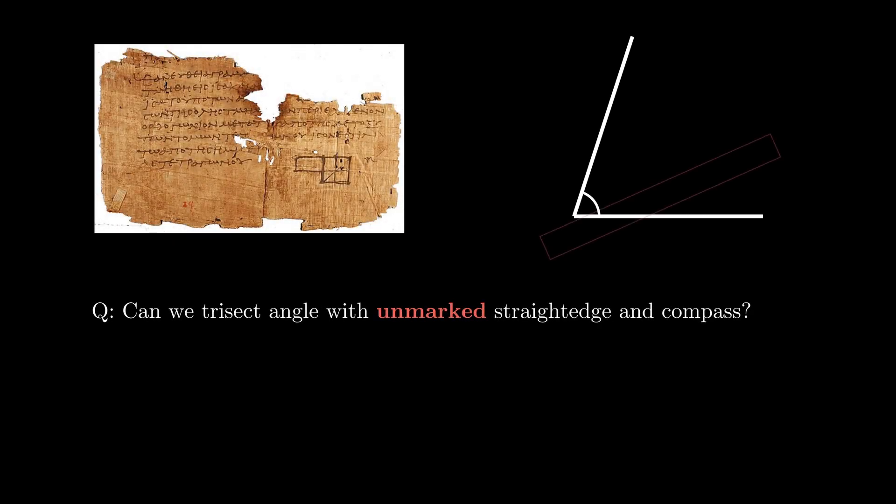The question on angle trisection can be traced back to ancient Greeks. Given an arbitrary angle, we are asked to trisect it with unmarked straight edge and compass.